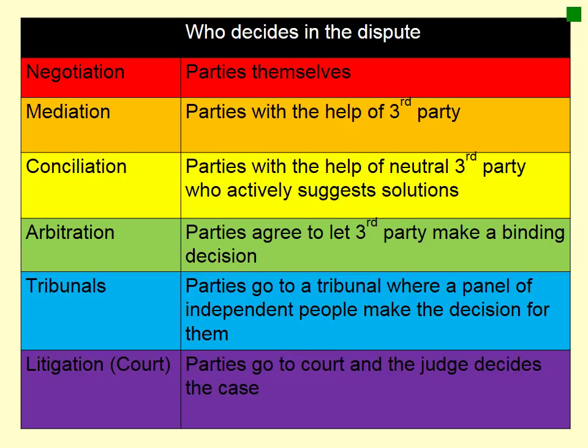We also have tribunals, where a panel of independent people make the decisions for the parties and their decision is binding. Tribunals look and act quite a lot like a court, and we're going to have a look at them to see whether you can spot the difference. At the bottom in purple is going to court, often known as litigation, where the parties actually go to court and the judge decides the case.